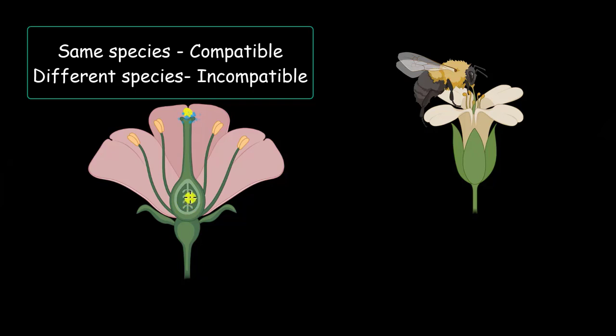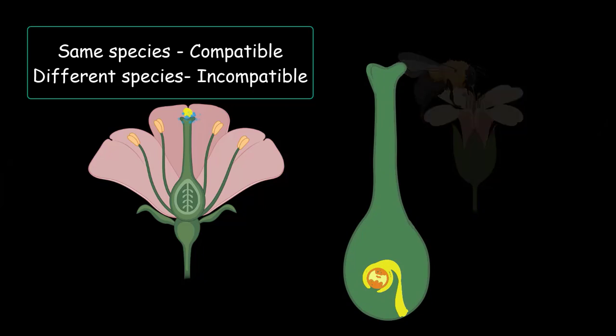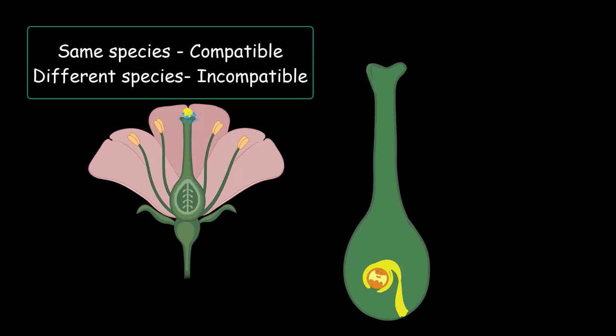And to understand that better, let me enlarge the female reproductive part, that is the pistil here. And also for ease of understanding, I have made just one ovule instead of so many in the ovary. And let us begin by placing a compatible pollen on top of the stigma. And before we even discuss what happens next, let us focus a little bit on the structure of pollen. We have discussed about the structure of pollen in great detail in the video called Microsporogenesis. But there is no harm in having a quick recap.